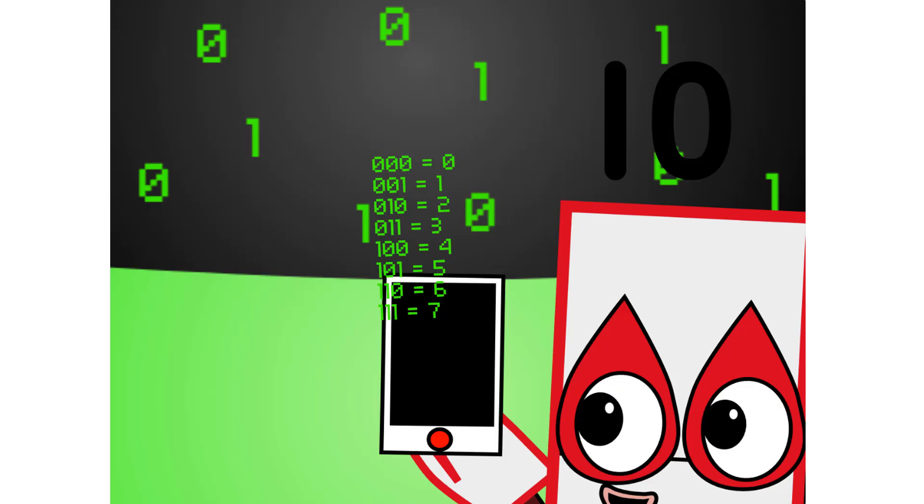There are 8 different combinations of 3 digit numbers in binary. This means that binary can easily be coded into octal. There are also 16 different combinations of 4 digit numbers in binary. This means that binary can easily be coded into hexadecimal too.